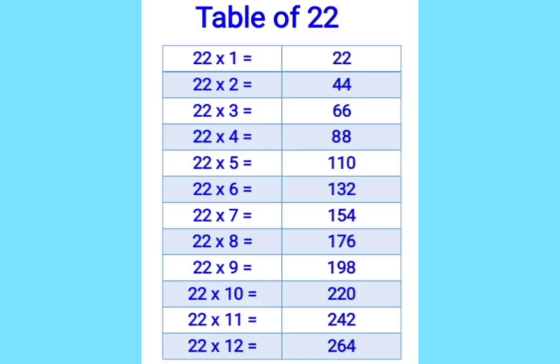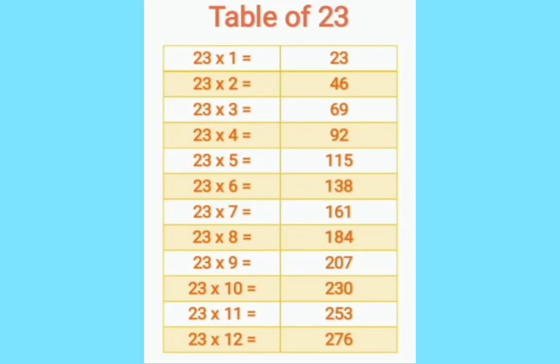22 ones are 22. 22 twos are 44. 22 threes are 66. 22 fours are 88. 22 fives are 110. 22 sixes are 132. 22 sevens are 154. 22 eights are 176. 22 nines are 198. 22 tens are 220. 22 elevens are 242. 22 twelves are 264.